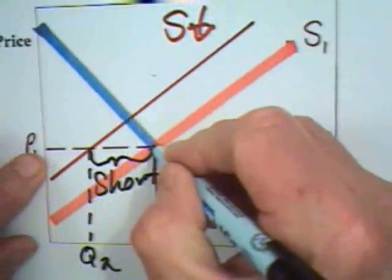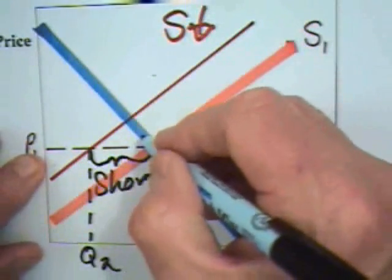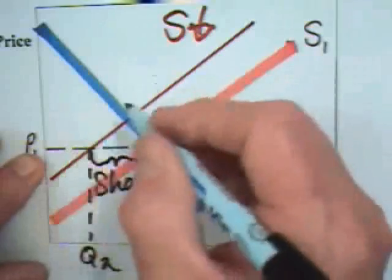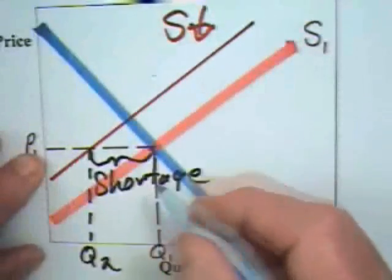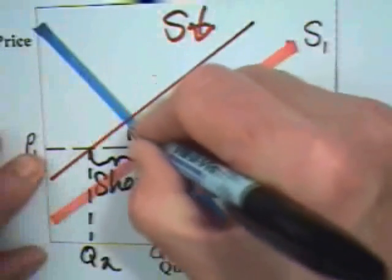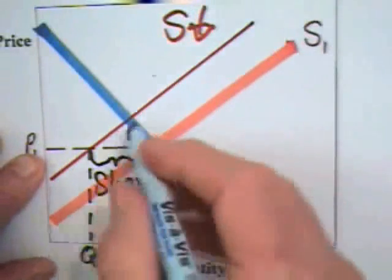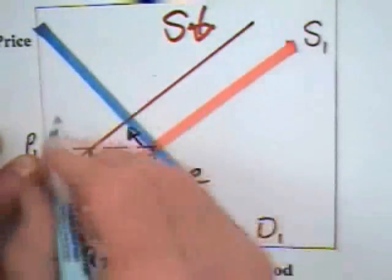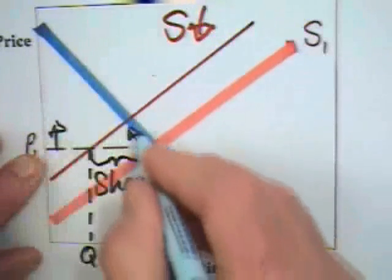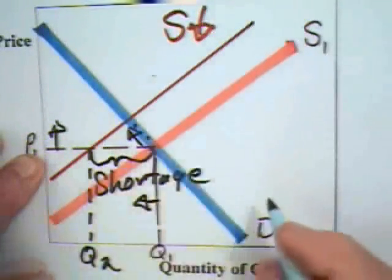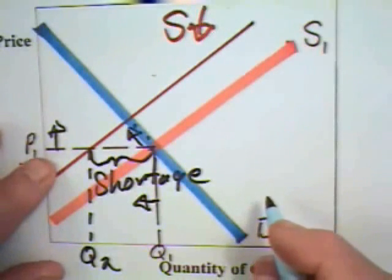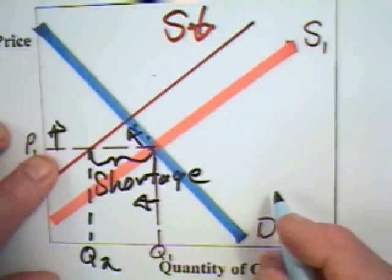Consumers who want more of this good will start bidding a higher price. Producers who want to offer more will start offering more at a higher price. When the price goes up, the quantity demanded starts going down. Why? Because as the price goes up, the price goes above the marginal value of these units and consumers will be better off by restricting their consumption.